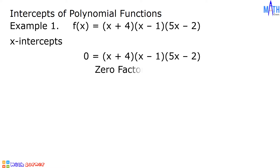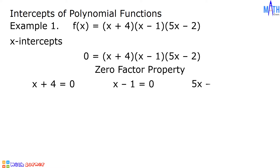Using the zero product property, we have x plus 4 equals 0, x minus 1 equals 0, and 5x minus 2 equals 0. Let us solve for x. In x plus 4 equals 0, we need to add negative 4 on both sides of the equation. Since 4 plus negative 4 equals 0, we have x on the left side. On the right side, 0 plus negative 4 equals negative 4. The value of x is equal to negative 4.